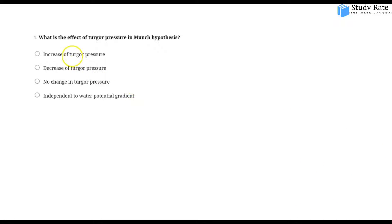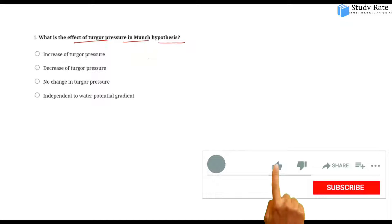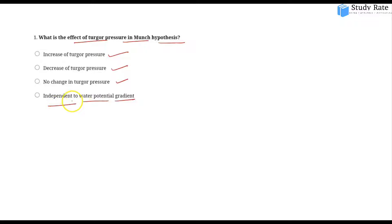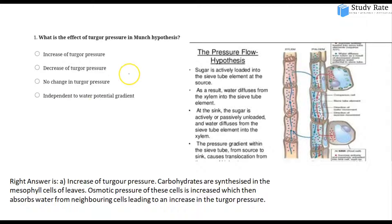The first question is: What is the effect of turgor pressure in Munch Hypothesis? Turgor pressure creates a water potential gradient. This hypothesis deals with the independence of the pressure gradient.